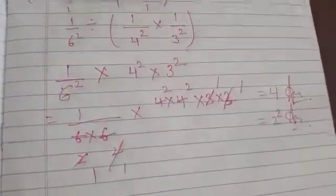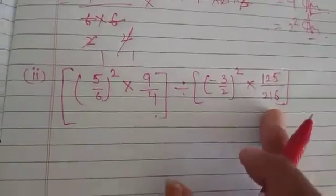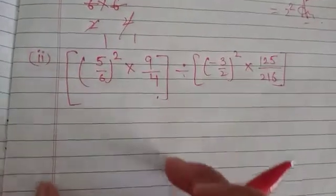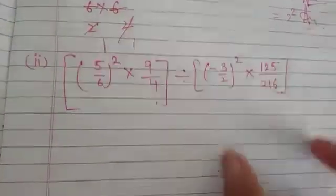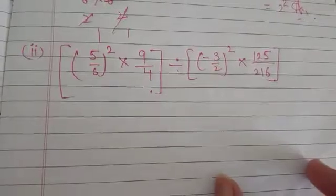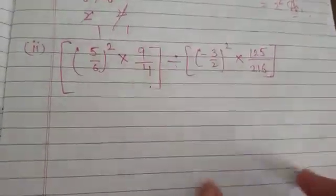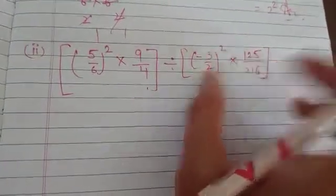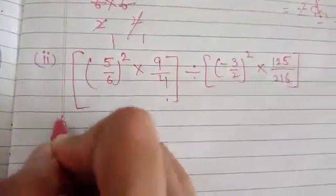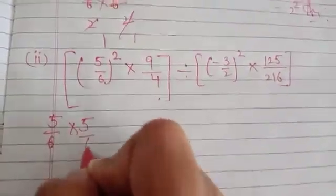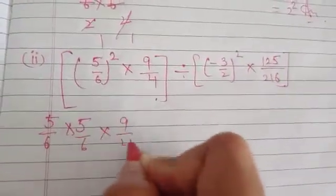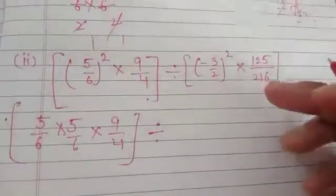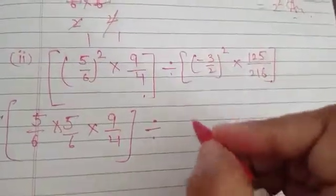Next part. So what do we do? First, I will open the bracket and try to solve it. Then I will solve the other bracket simultaneously. After getting the answer, I will do the reciprocal of this bracket to find the final answer. So we have 5 over 6, 5 over 6, and 9 over 4. You can change the division sign to multiplication by doing the reciprocal.